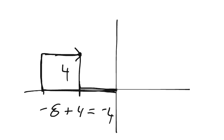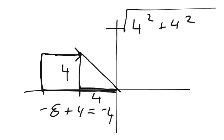So we know that this is 4 units, 4 blocks. This is 4 blocks. What is that? So, 4 squared plus 4 squared. Find the square root of that.